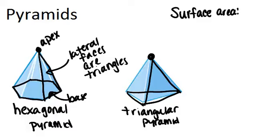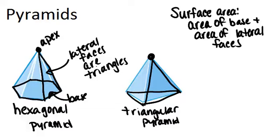In order to figure out the surface area of a pyramid you'll need to figure out the area of the base and add it to the area of all the lateral faces. Because the lateral faces are always triangles you'll need to know a special measurement.